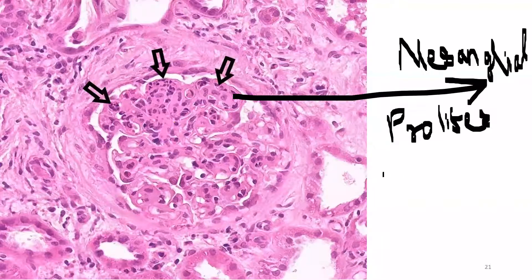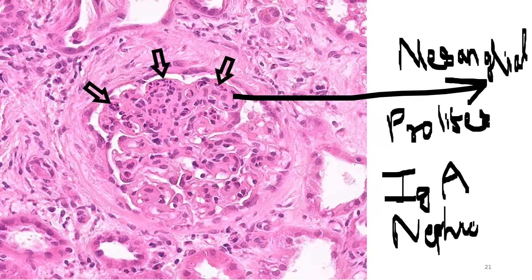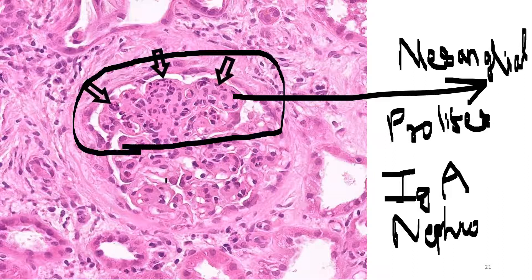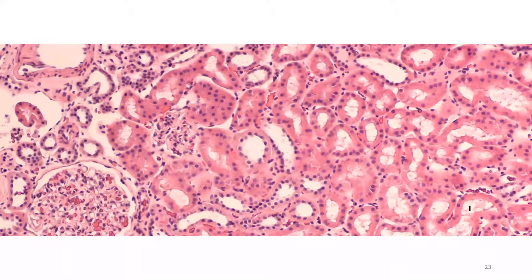This slide shows mesangial proliferation, which is characteristic of IgA nephropathy. When mesangial proliferation is seen on biopsy without a specific clinical case detail, it is mostly associated with IgA nephropathy.